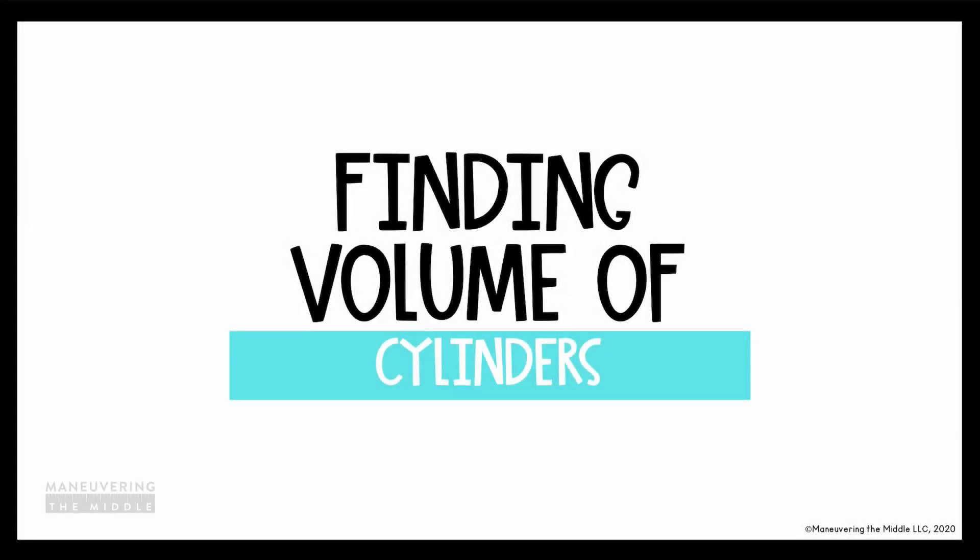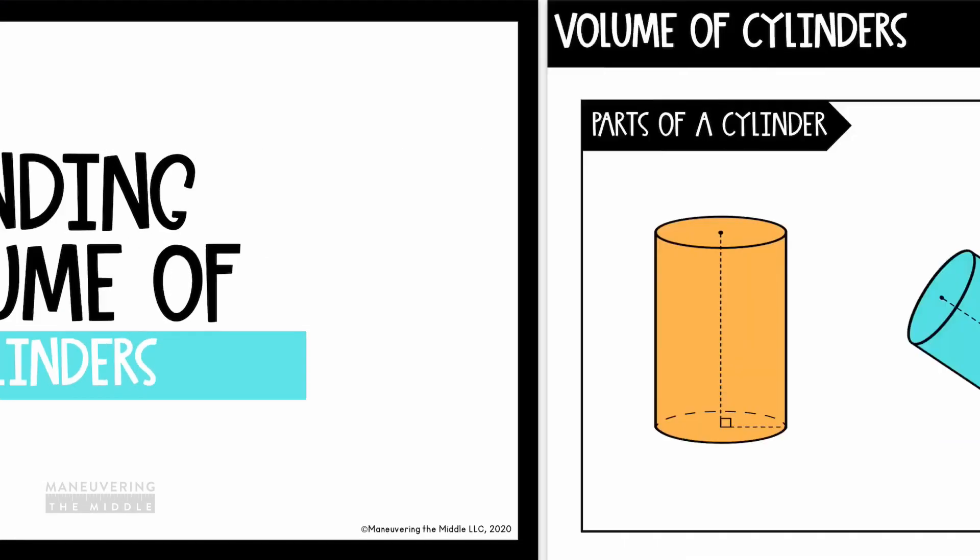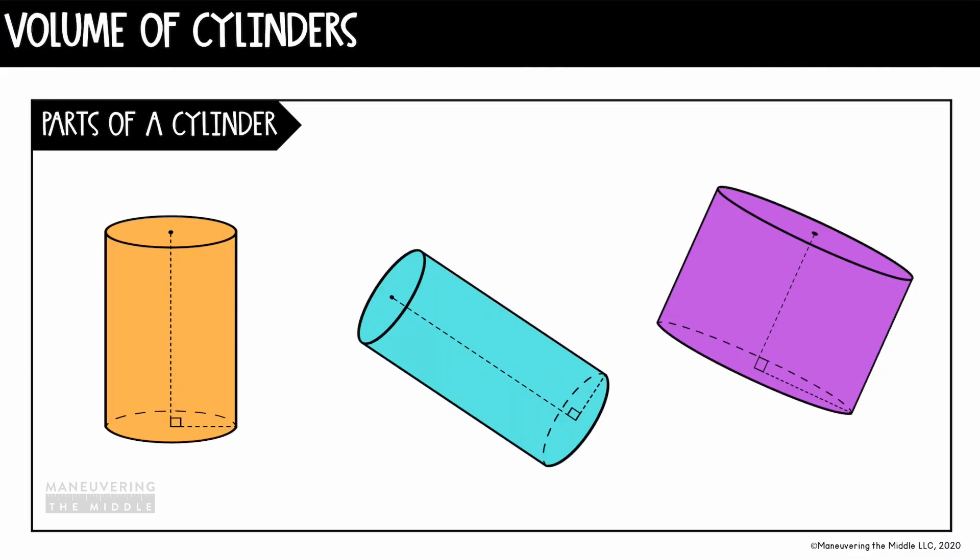In this video, we're going to find the volume of cylinders. So let's start by making sure we understand the different parts of a cylinder. First, every cylinder has two bases and each base is shaped like a circular face. So no matter which direction the cylinder is facing or how it's sitting, the base will always be one of the circular faces.